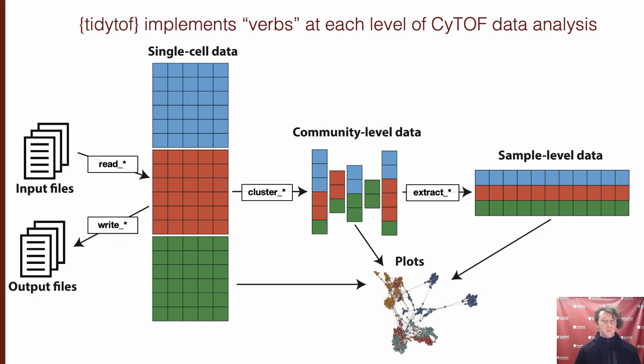The first set of verbs implemented in TidyTOF are for moving between raw files and each level of analysis that we talked about in the previous section. These include the read, write, cluster, and extract verbs. The second set of verbs are for producing plots from each level of analysis and include the plot single cell, plot cluster, and plot sample verbs. And finally, the last set of verbs implemented in TidyTOF are for computing within each level of analysis.